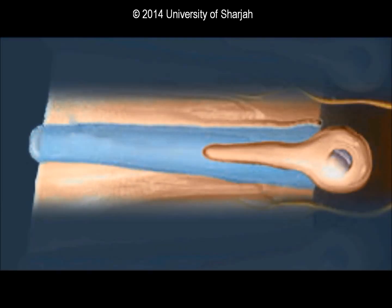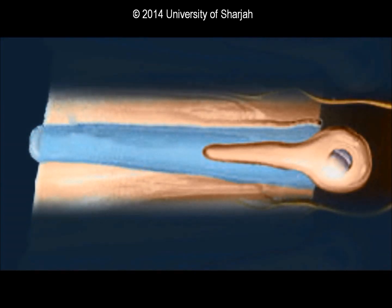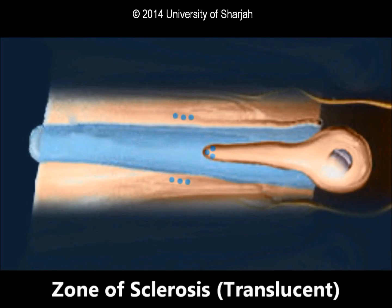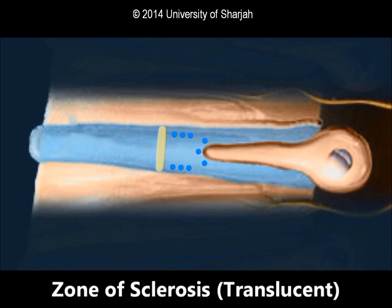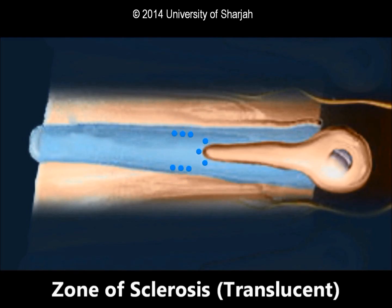Different zones are found in dentin caries. The first zone is the sclerotic zone, a defense reaction that occurs within the tubules when acid initially starts to penetrate them. The odontoblast processes begin to lay down calcification within the tubules, and they become plugged with mineral deposits. This helps slow down the acid advance, giving the pulp some protection.